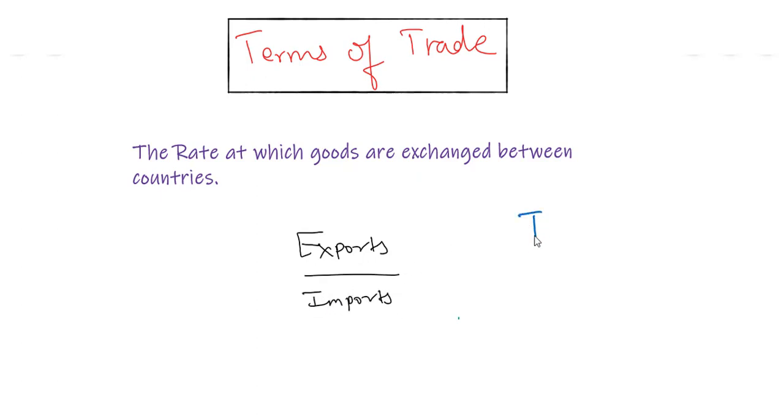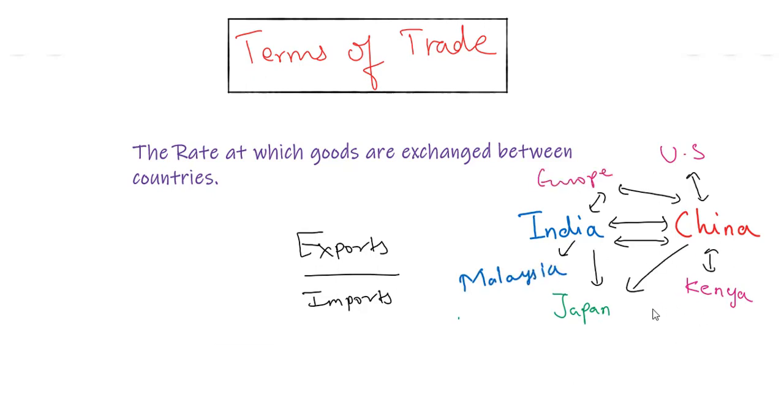In the real world, it's not just two countries that trade between each other, but most countries keep trading with each other. Hence, the Terms of Trade are given in the form of indexes. You will understand what I mean by this as the lecture progresses.